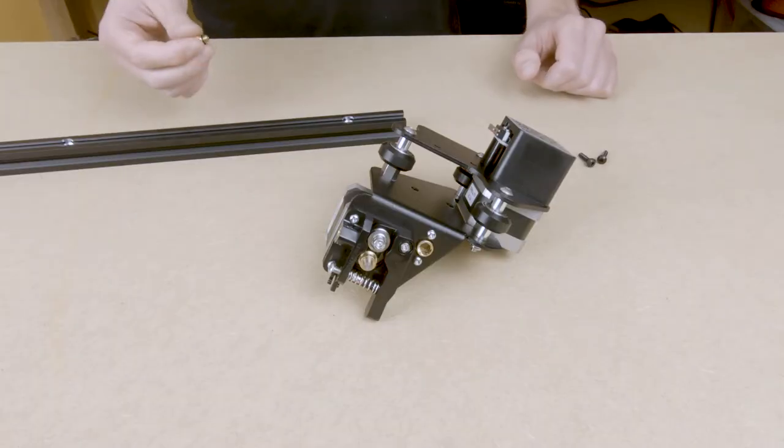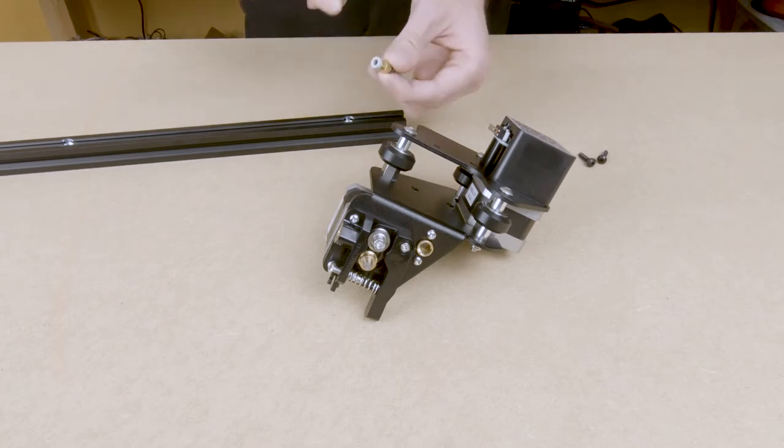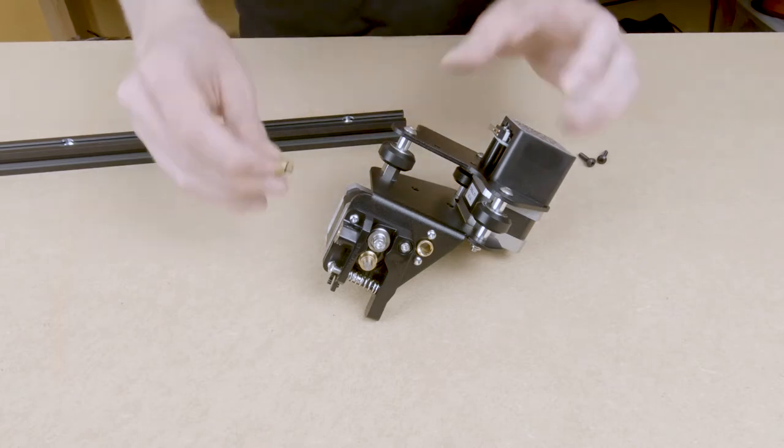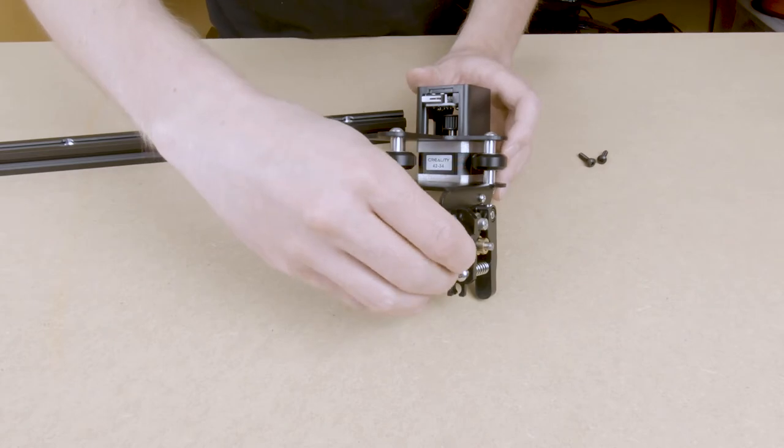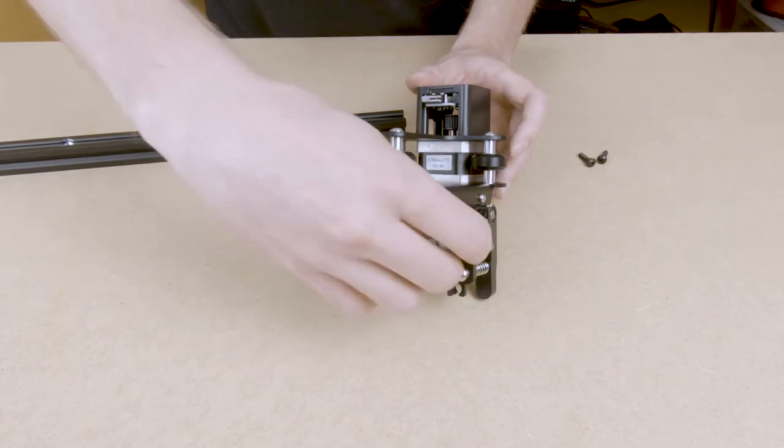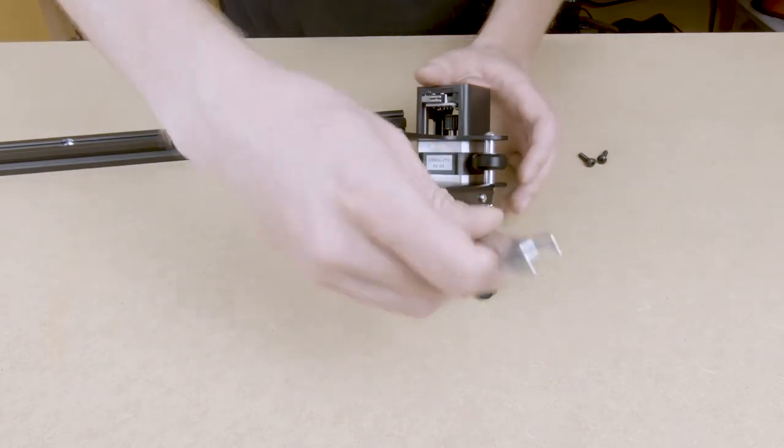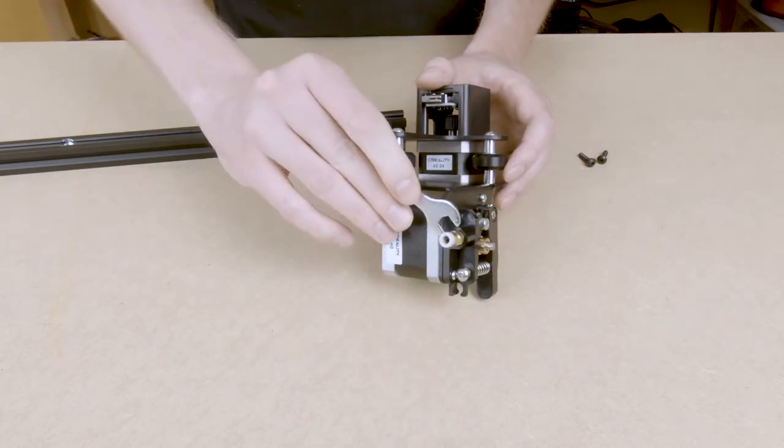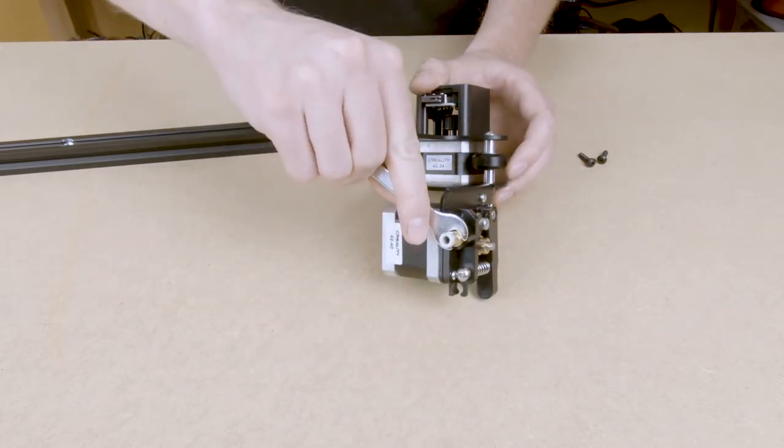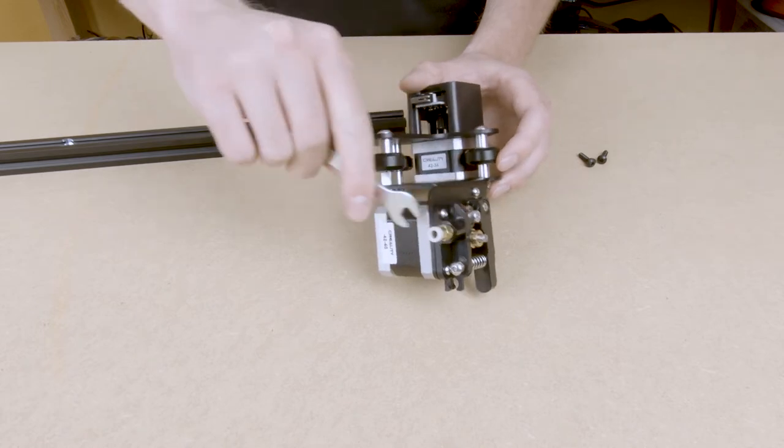We have the base done. So now we're going to put in the coupler for the Bowden tube. And you'll use your little open-ended wrench. Just make sure you don't crank these down too hard, because it's pretty easy to strip out these brass fittings.